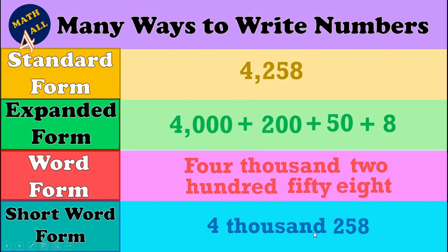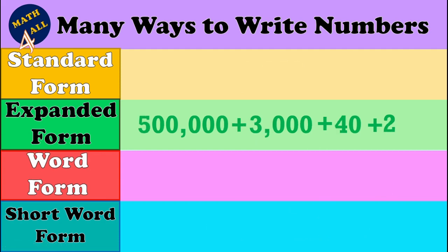Now let's see more examples. Here we have the expanded form and we want to write the standard form, the word form, and the short word form. In this example we have the expanded form: five hundred thousand plus three thousand plus forty plus two.